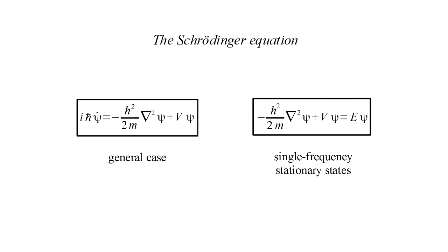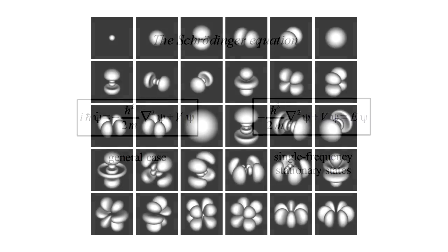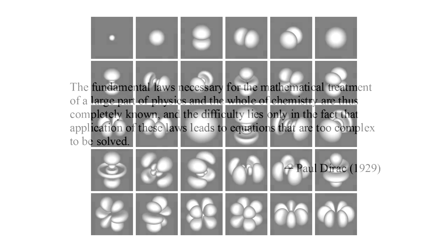As people continued to study the Schrödinger equation and its solutions, they found it precisely explained an ever-expanding range of physical phenomena. So by 1929, physicist Paul Dirac was justified in writing, The fundamental laws necessary for the mathematical treatment of a large part of physics and the whole of chemistry are thus completely known, and the difficulty lies only in the fact that application of these laws leads to equations that are too complex to be solved.